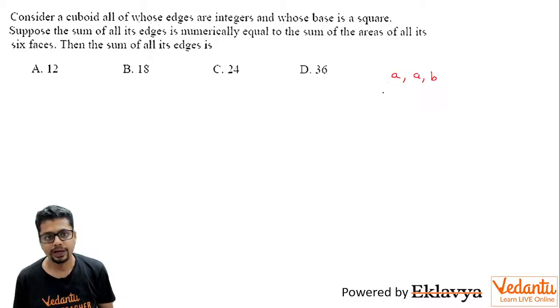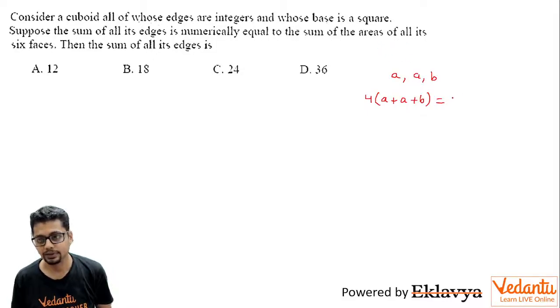So here what you have is the sum of all the edges. There will be four edges of length A, four more of A, and four of B. This is equal to the sum of areas of all its six faces. So there will be two faces of area A², two of AB, and yet another two of AB.